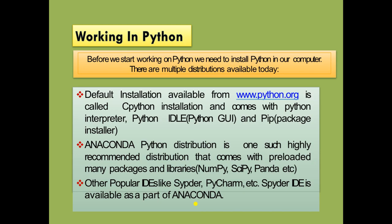Working in Python: before starting, you need to install Python on your computer. There are multiple distributions available. From python.org, the CPython installation comes with the Python interpreter, IDLE, and pip package installer. Anaconda is another highly recommended distribution that comes pre-loaded with many packages and libraries such as NumPy, pandas, etc. Popular IDEs include Spyder and PyCharm. Here we will install the simple Python IDLE, which is free.